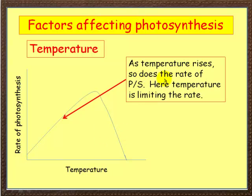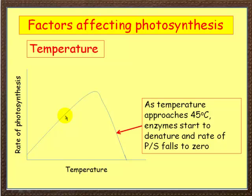As the temperature rises, so does the rate of photosynthesis. At this part of the graph, temperature is the limiting factor. As the temperature approaches about 45 degrees Celsius, the enzymes inside the plant start to denature. Denature means to break apart, to stop functioning properly, and the rate of photosynthesis falls to zero. The optimum is around 35 to 40 degrees Celsius.